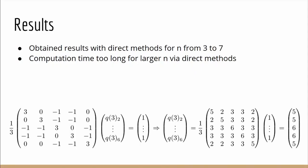So in the end we managed to obtain results with direct methods for n equals 3 to 7 inclusive. And here's the result for n equals 3, that's 5, 5, 6, 6, 5. But the computation time for the larger n turns out to be too long with direct methods and we haven't obtained any results yet.